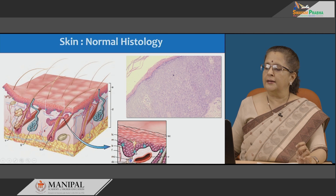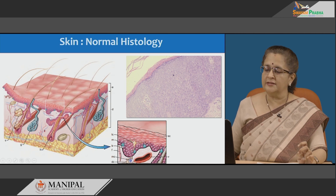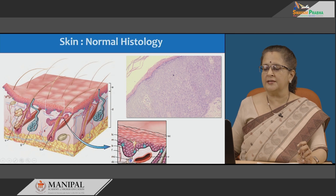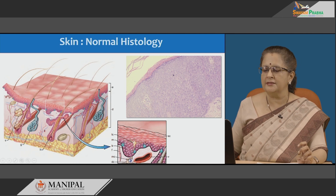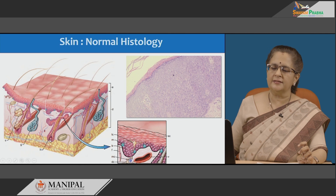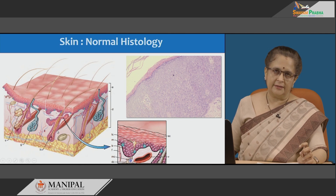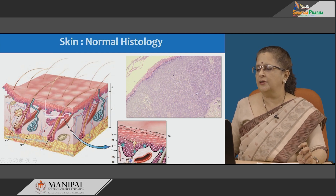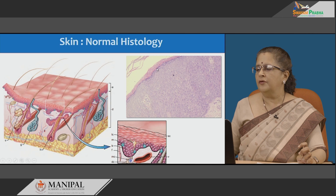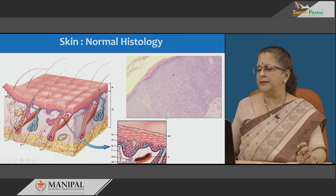Occasional melanin-containing melanocytes or Merkel cells are noted within the basal layer. Below that is the dermis. The epidermis projects into the dermis as rete ridges, and the space between two rete ridges is known as papillary dermis. Below that is the reticular dermis. The papillary dermis has blood vessels, and both the papillary and reticular dermis have extensions of various adnexal structures. Histopathologically, from top to bottom we see the stratum corneum, stratum granulosum, stratum spinosum, and the basal layer, with papillary dermis between the rete ridges.